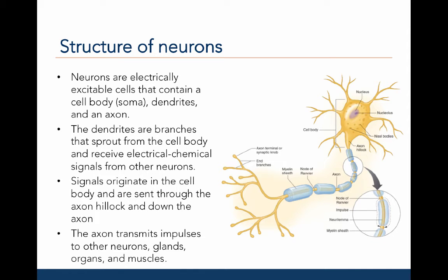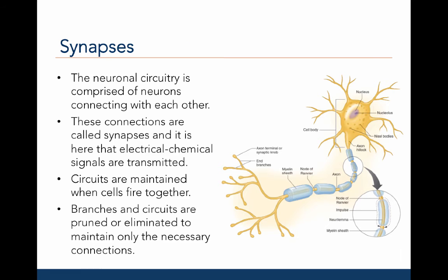Neurons are the basic cells of the nervous system. They are electrically excitable cells that contain a cell body, also called the soma, which contains a nucleus and organelles important for protein and neurotransmitter synthesis. Neurons also have dendrites with branches that sprout from the cell body and receive electrochemical signals from other neurons. Signals originate in the cell body and are sent through the axon hillock and down the axon, which then transmits impulses and neurotransmitters to other neurons, glands, organs, and muscles. These connections are called synapses, and it is at these synapses that electrochemical signals are transmitted. Circuits are maintained when cells fire together, and branches or circuits are pruned to maintain only the necessary connections.